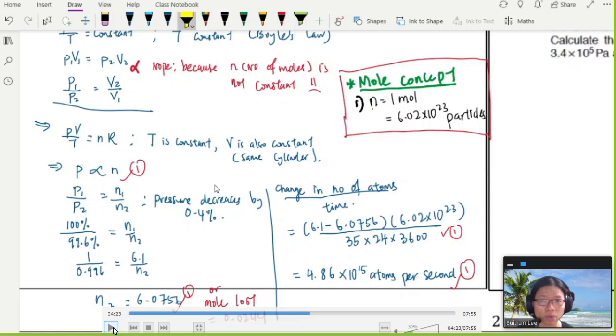This is the end of the first example where we use ideal gas and there's a leakage in the cylinder, but the volume remains the same. I'll see you in the next video.